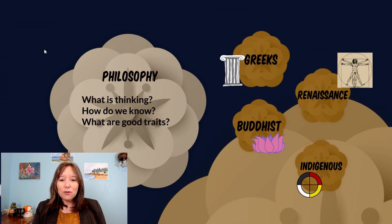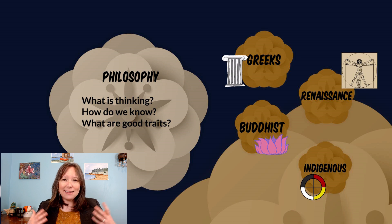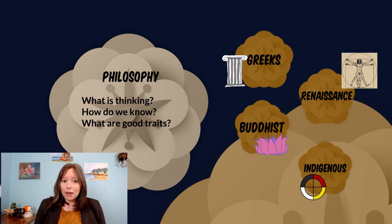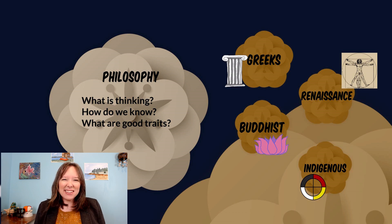When we think about philosophy, there are a couple different schools of philosophy that Western psychology tends to harken back to, primarily Western philosophy. Philosophy as an academic discipline can overlap with psychology when we think about theoretical topics such as: what is thinking? How do we know what we know? What are the good traits? What's an important trait for a person to have versus what's less of a desirable trait? What is the good? What is virtue?